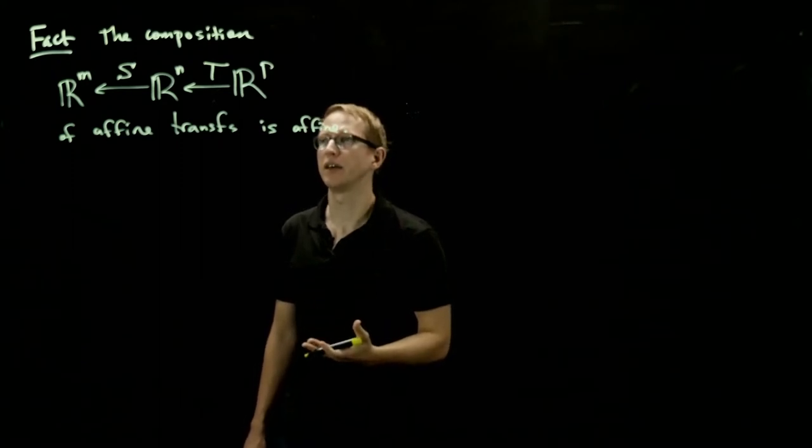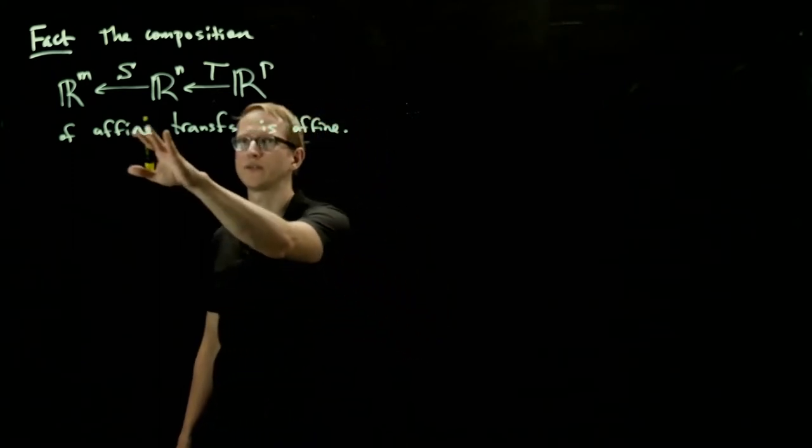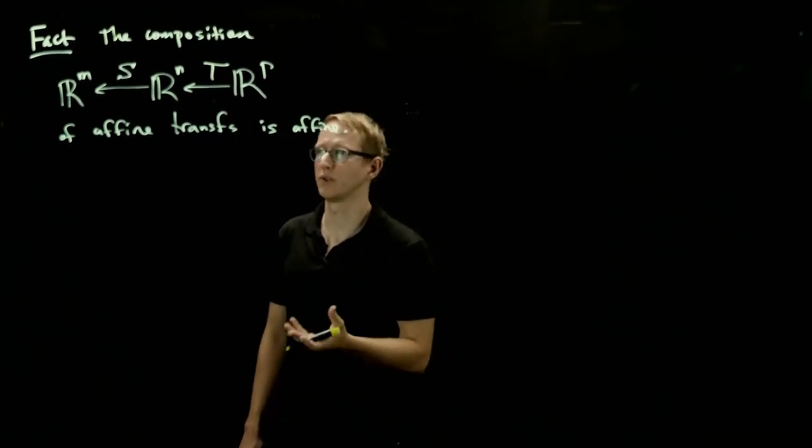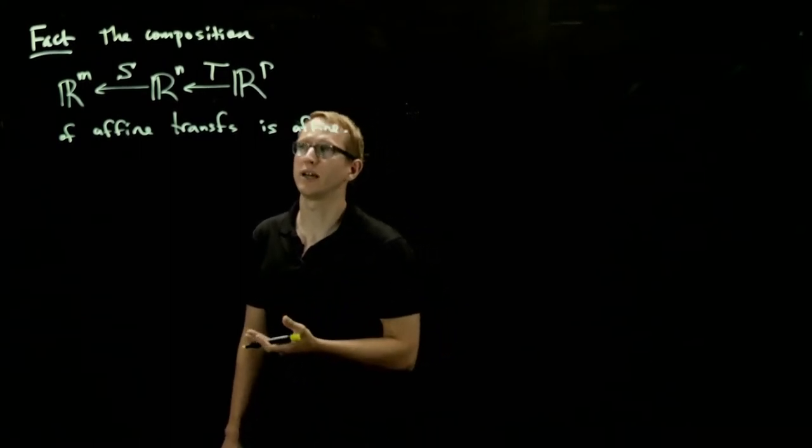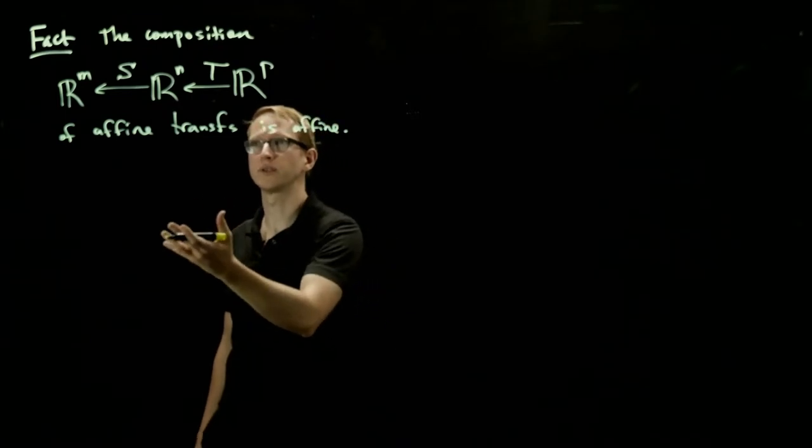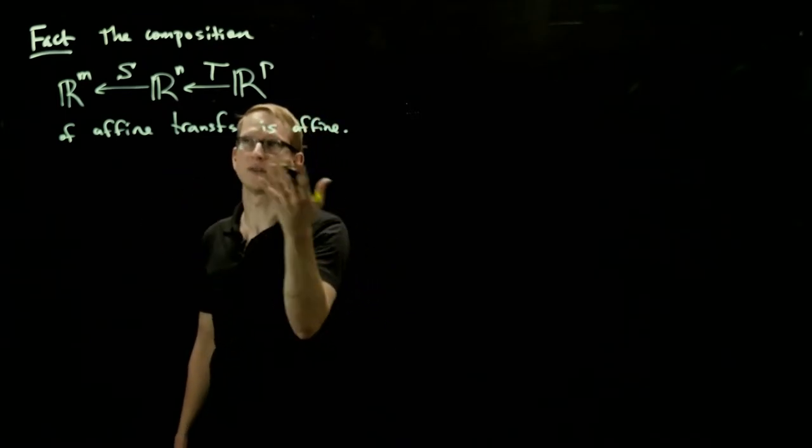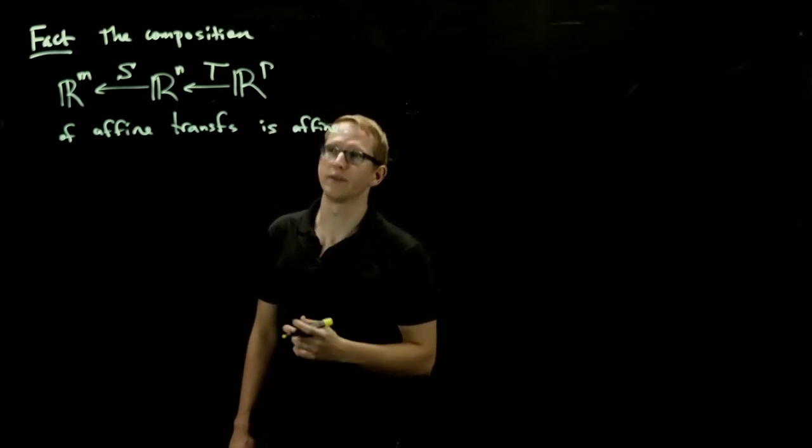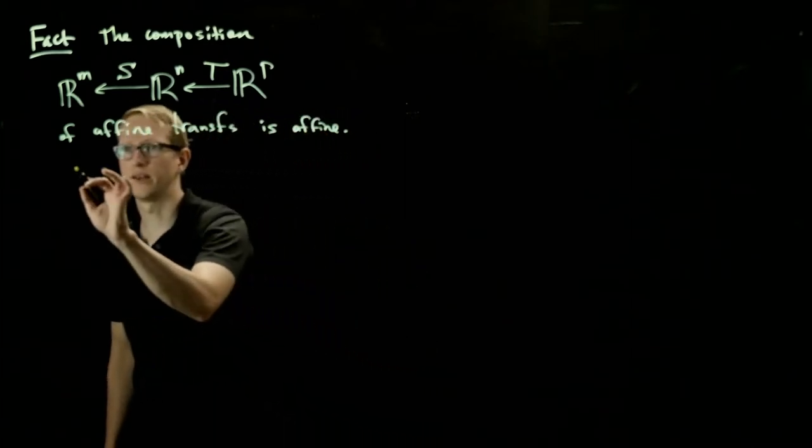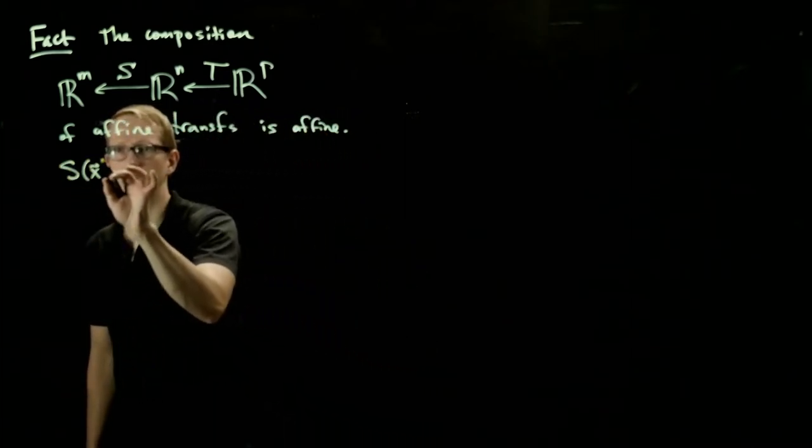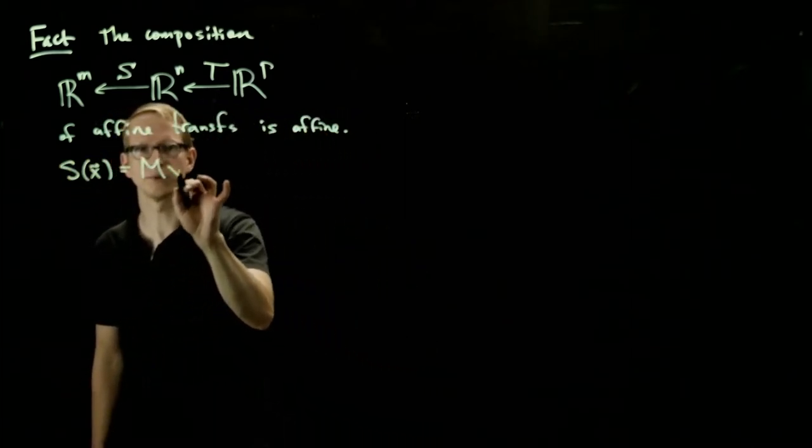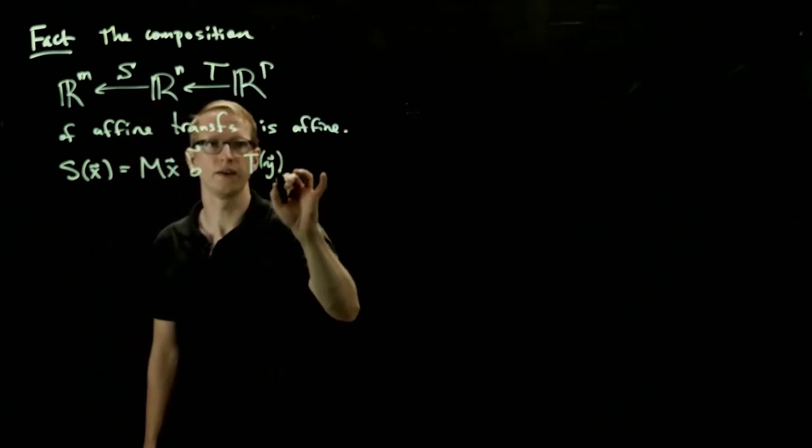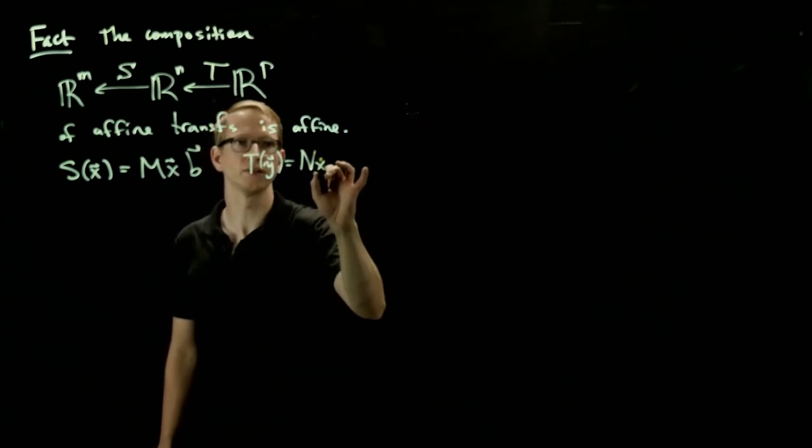And because it's affine, and we know that each of these transformations can be written in the form of Mx plus B, for some appropriate matrices and appropriate vectors B, we can ask, what are the resulting matrices and vectors for the composition of two affine transformations? So let's write S of x as Mx plus B, and T of y as Ny plus C.